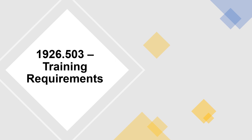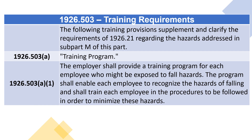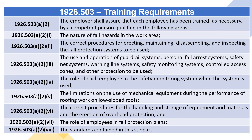1926.503 — Training requirements. The following training provisions supplement and clarify the requirements of 1926.21 regarding the hazards addressed in subpart M of this part. 1926.503(a) — Training program. The employer shall provide a training program for each employee who might be exposed to fall hazards. The program shall enable each employee to recognize the hazards of falling and shall train each employee in the procedures to be followed in order to minimize these hazards.